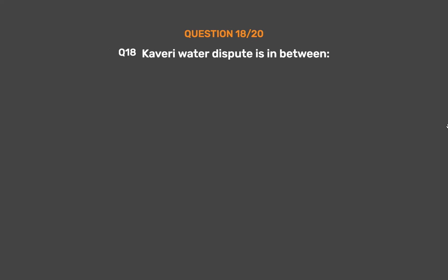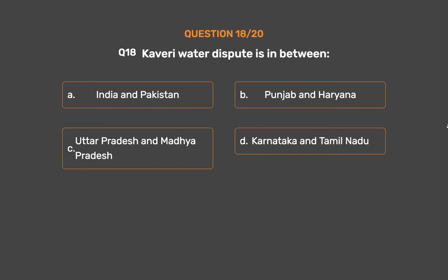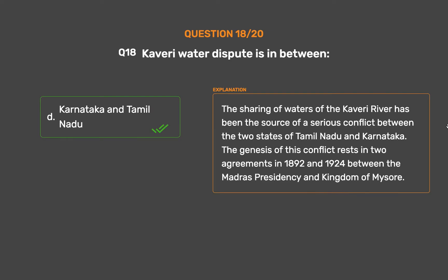Question number eighteen: the Cauveri water dispute is between — Option A: India and Pakistan. Option B: Punjab and Haryana. Option C: Uttar Pradesh and Madhya Pradesh. Option D: Karnataka and Tamil Nadu. The correct answer is option D, Karnataka and Tamil Nadu. The sharing of waters of the Kaveri river has been the source of a serious conflict between the two states of Tamil Nadu and Karnataka. The genesis of this conflict rests in two agreements in 1892 and 1924 between the Madras Presidency and the Kingdom of Mysore.